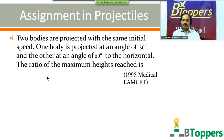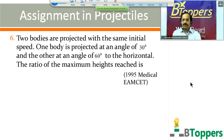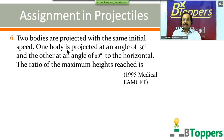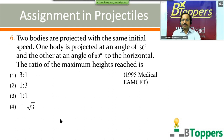Question number 6: two bodies are projected with the same initial speed, one at an angle of 30 degrees and the other at 60 degrees to the horizontal. The ratio of the maximum heights reached — four options are shown on screen. This question was originally given in the 1995 MSET medical entrance exam. Come on, try the question.